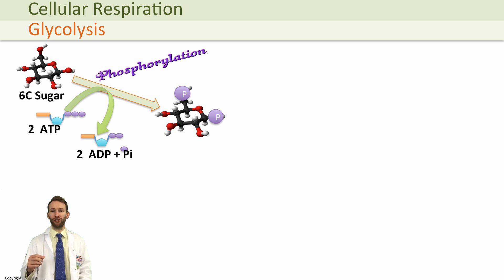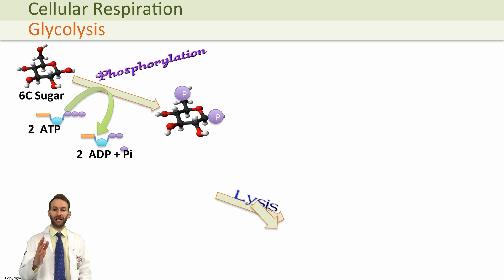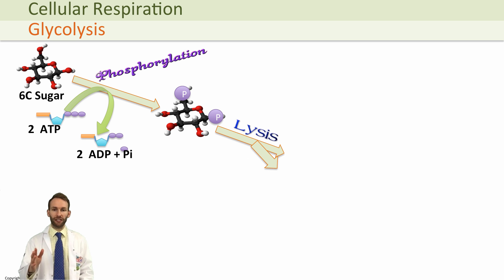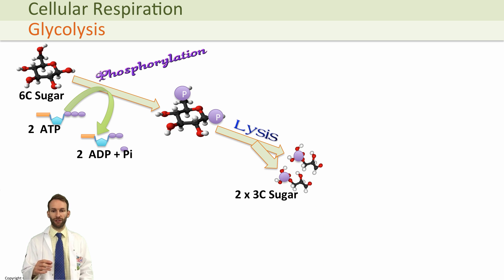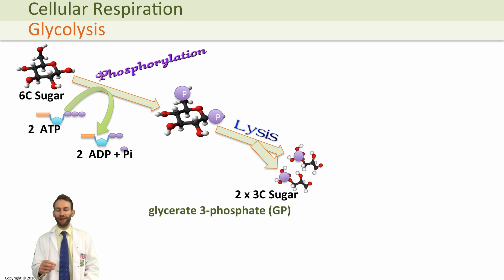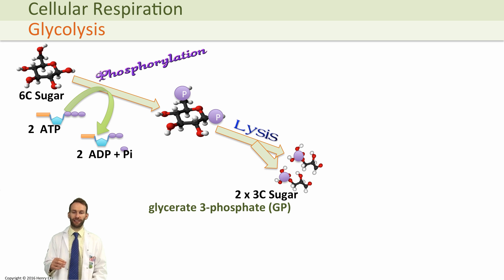The next thing we do is the splitting — the lysis. We split that six-carbon molecule into two three-carbon molecules, and these are called glycerate-3-phosphates.